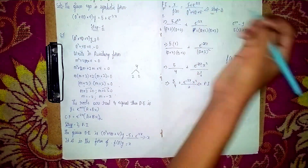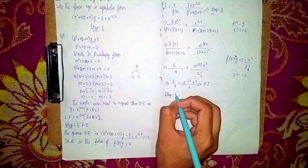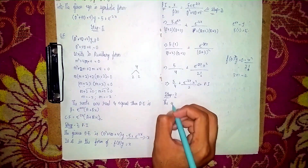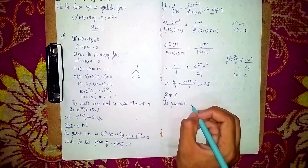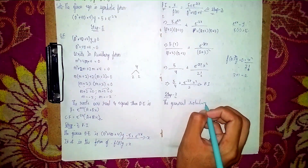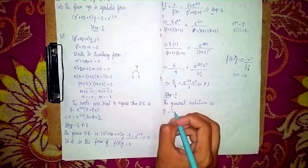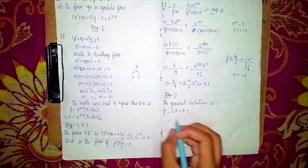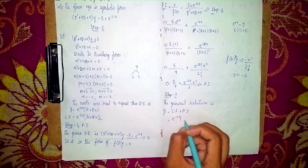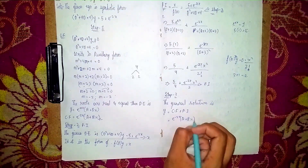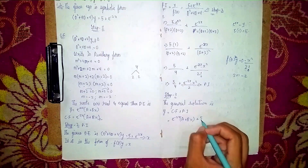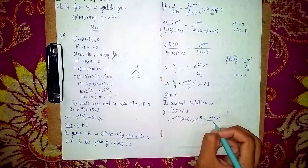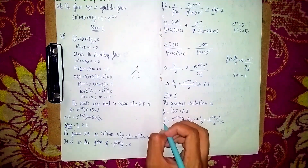Step 3: to find the general solution. The general solution is y = CF + PI. Substituting: y = e^(−2x)(a + bx) + 5/4 + e^(−2x) · x²/2. This is our general solution and our final answer. Thanks for watching.